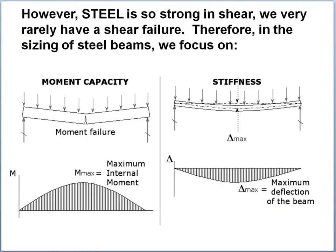We're sizing for moment capacity and stiffness in steel beams. We already went through a sizing procedure for stiffness, and it is based on using the live load, so it's non-iterative because none of the calculations change once you've established a certain weight for the self-weight of the beam. The sizing for stiffness also gives a baseline to start the calculation for moment capacity, because moment capacity has to include the self-weight of the beam. We do stiffness sizing first, then use that output as the first input to moment capacity.